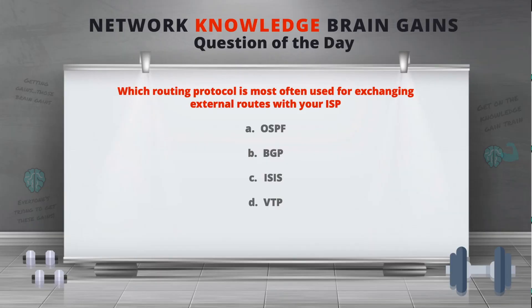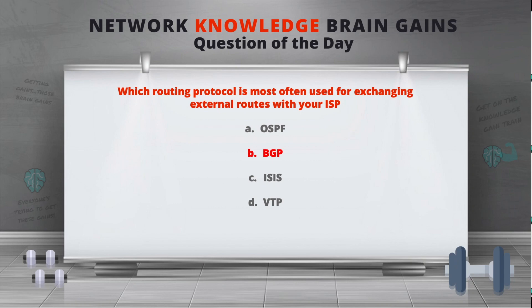Remember our question: which routing protocol is most often used for exchanging external routes with your ISP? Hope you wrote your answers in the comments. The answer is B) BGP. The Border Gateway Protocol is the routing protocol most often used across the internet. ISPs use it, and normally if you have a medium to large size organization with internet connectivity and different routes that need to be advertised, BGP is what you'll use to share those routes with your ISP. Make sure you hit the like, subscribe, and notification bell, and we'll talk soon!